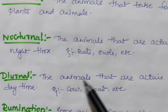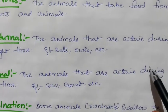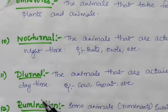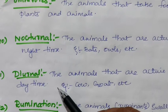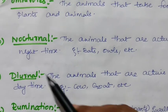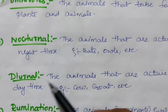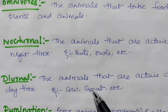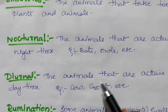Diurnal: the animals that are active during the day time are called diurnal animals. Examples include cow, goat, and sheep.